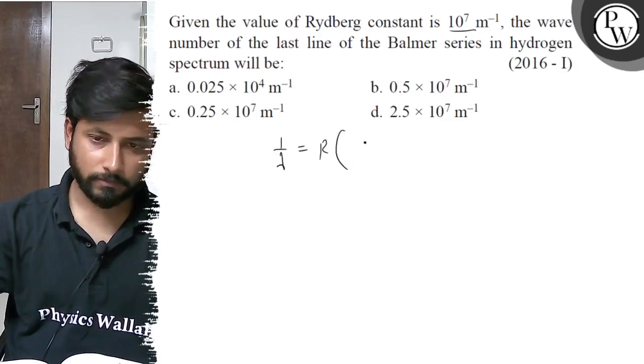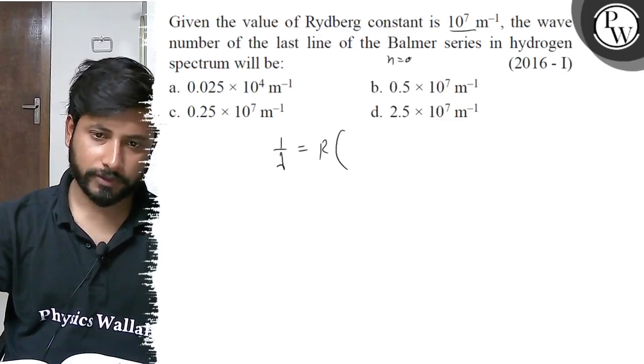For the last line of Balmer series, we have n₂ = ∞ and n₁ = 2. Here we have 1/λ = R(1/2² - 1/∞²).